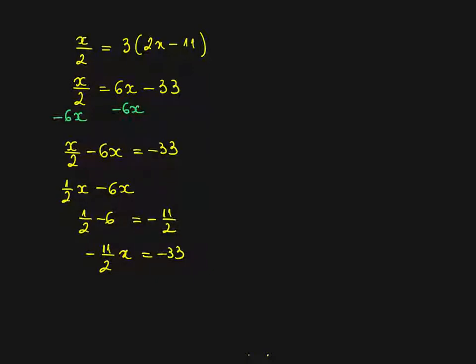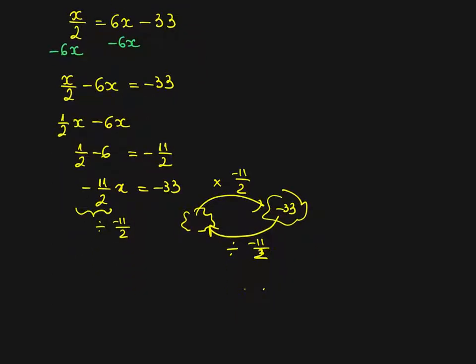Same as in the previous model I need to divide by minus 11 over 2 to be left with x. Imagine that x is something that if you times by minus 11 over 2 you end up to minus 33. So to go back and find x you need to divide by minus 11 over 2. Therefore your x will be minus 33 divided by minus 11 over 2.